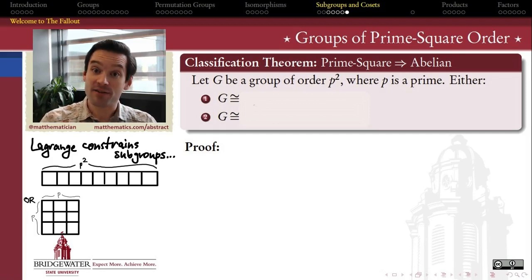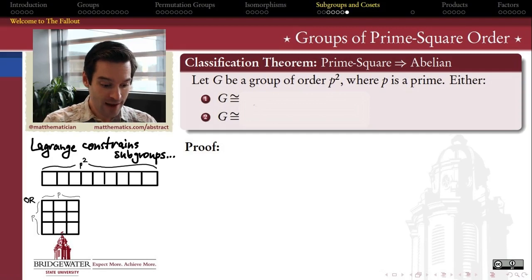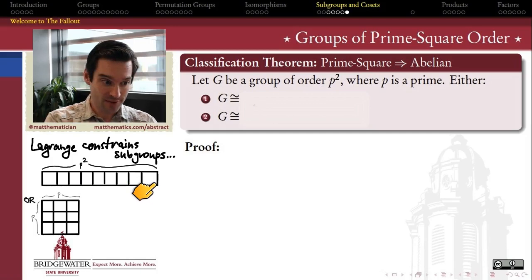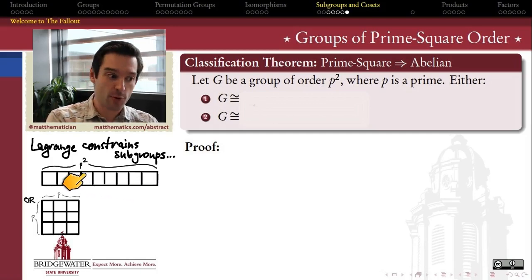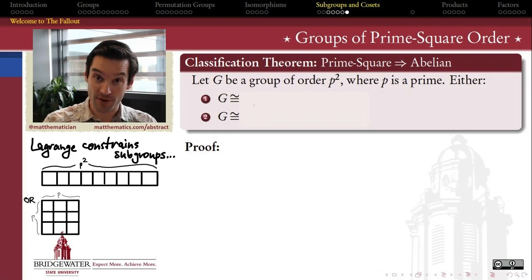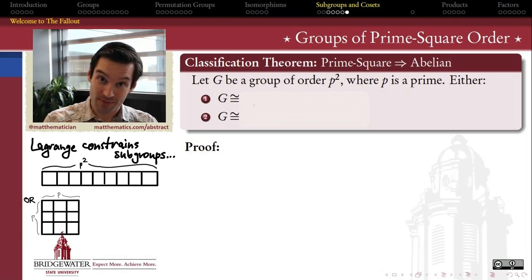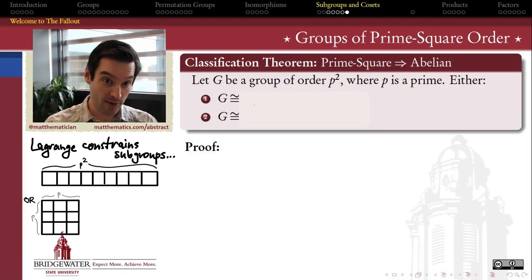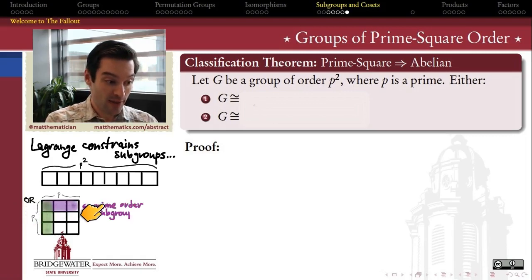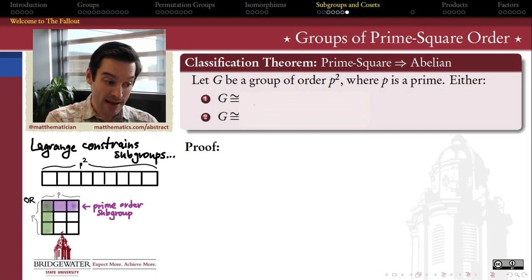So Lagrange tells us these are the only possibilities for subgroups of my group of prime-square order, and the interesting one is the case where the subgroup consists of all p elements — we can think of a group with that diagram as just being a cyclic group of order p-squared. But the group we get from the other picture is more interesting, because it fits into the framework we've been discussing: a normal subgroup that has prime order p, which also has p many cosets.